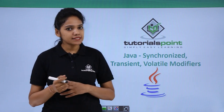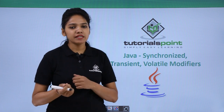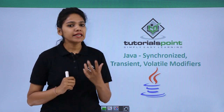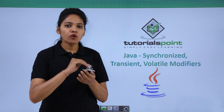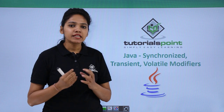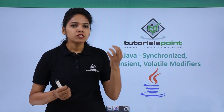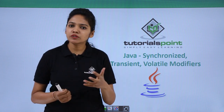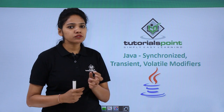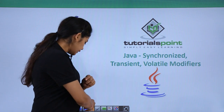The few other types of non-access modifiers are synchronized, transient, and volatile modifiers. Let us understand in detail about each of them and how they are used. Mainly, all these types of modifiers are used in the concept of threading. Threading is nothing but which allows a number of tasks to be performed together, and we need to understand what resources are to be used or freed up.